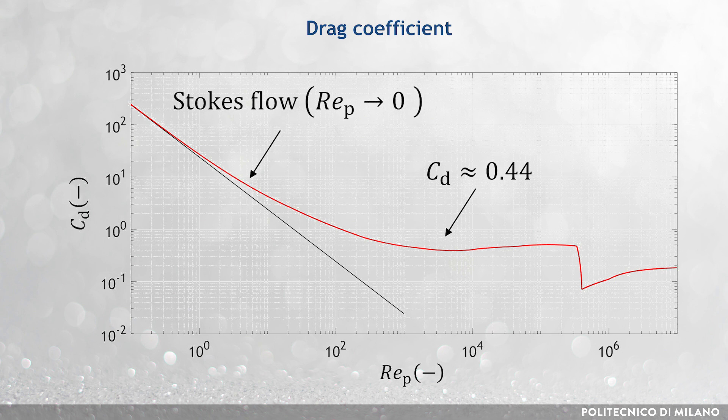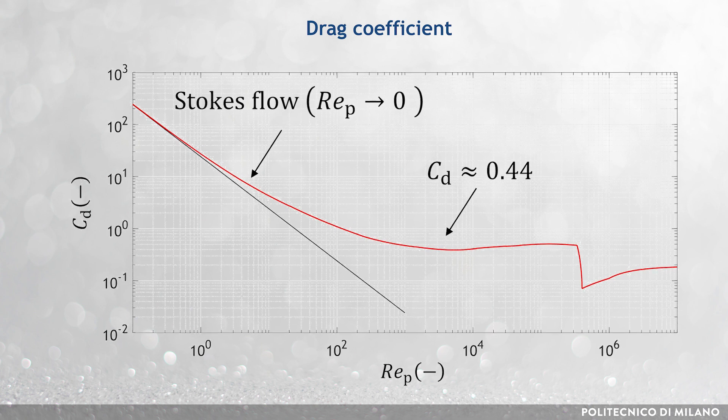The configuration of the flow has a direct effect on the drag coefficient, which first tends to become stable on average and equal to about 0.44, and after a sudden drop at particle Reynolds number between 10^5 and 10^6, it increases slowly.